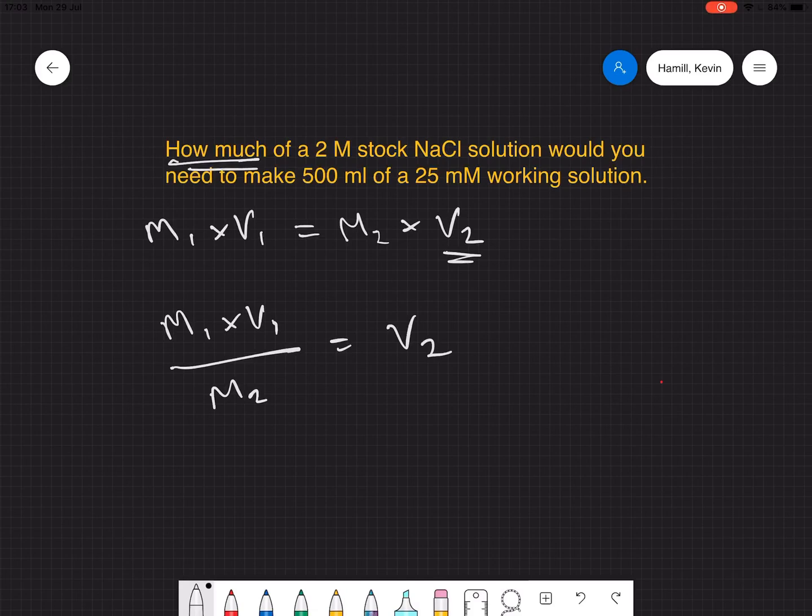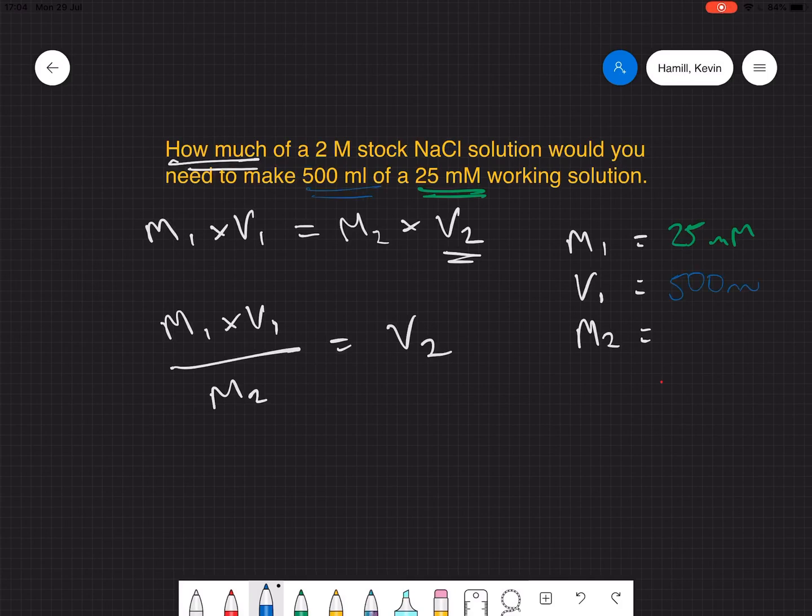Now let's identify what we have. We need to identify these three components: molarity 1, volume 1, and molarity 2. In this case, the way that I've organized it, molarity 1 is going to be the concentration of what we want, 25 millimolar. The volume 1 is going to be the volume of what we need, which is 500 mils. And then molarity 2 is going to be the concentration of the stock solution, which is 2 molar.